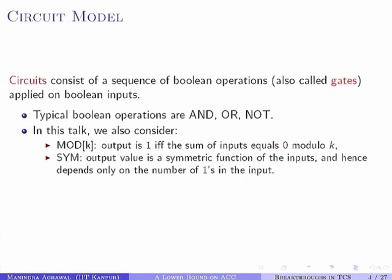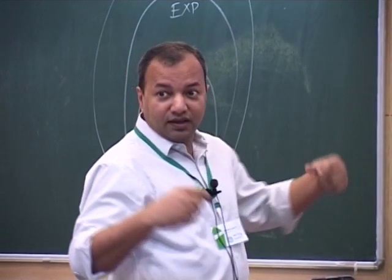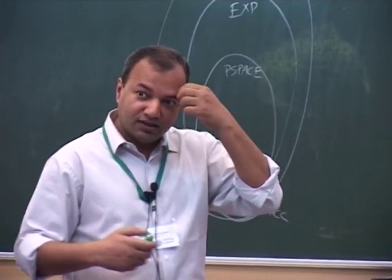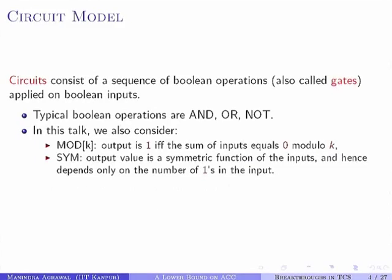In this talk I will consider two more kinds of Boolean operations. The first is mod k, which is a gate that takes a bunch of inputs, sums them up, and outputs a 1 if and only if the sum equals 0 modulo k, otherwise it outputs 0. The other is a symmetric gate, which represents a symmetric function of the inputs — the output depends only on the number of 1s in the input.